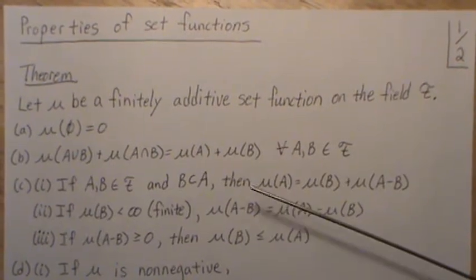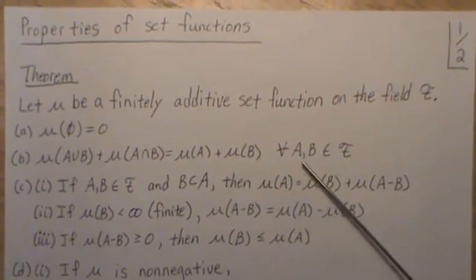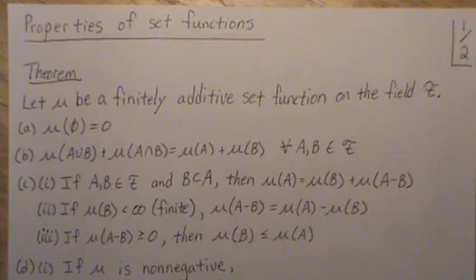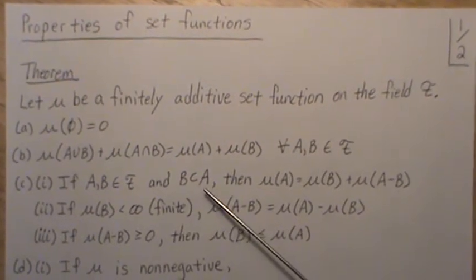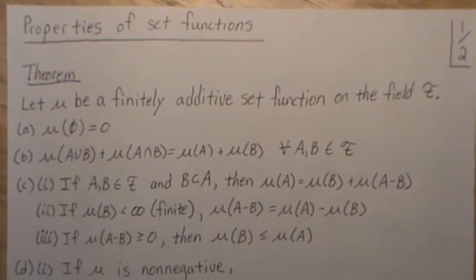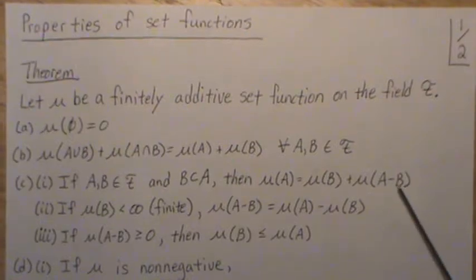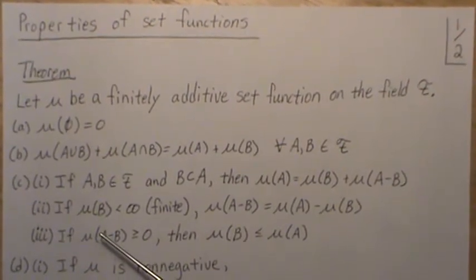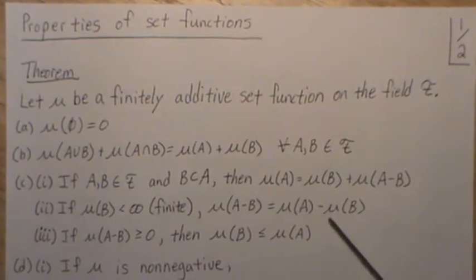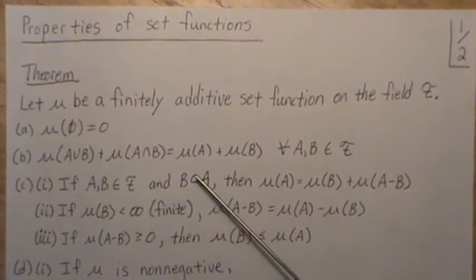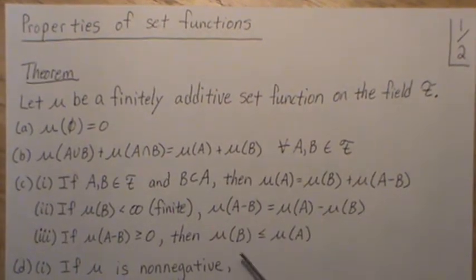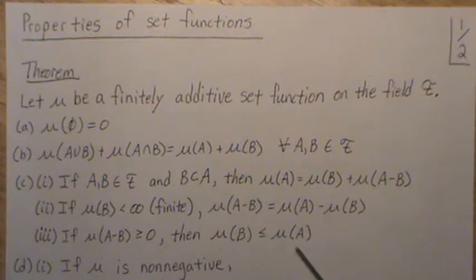A lot of these are intuitive, but we're going to go through and prove them. This is for all sets A, B in the field F. Now if A and B are in the field and B is a subset of A, then the following three properties hold: that mu of A is equal to mu of B plus mu of A minus B. If also mu of B is less than infinity, then this relationship holds. If mu of A minus B is non-negative, then mu of B is less than or equal to mu of A.